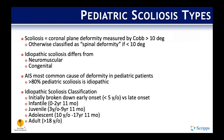Scoliosis is defined as greater than 10 degrees coronal deformity. If it's less than that, it's defined as spinal deformity rather than scoliosis. It's important to distinguish between idiopathic versus other non-idiopathic etiologies. AIS is the most common cause of spinal deformity in pediatric patients, and almost 80% of all cases, regardless of age, are idiopathic. Based on age, AIS or adolescent scoliosis falls between 10 and 17 years and 11 months.